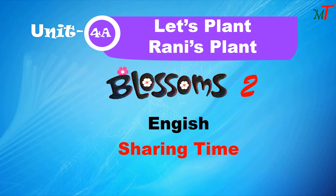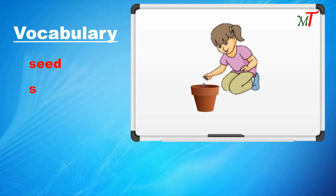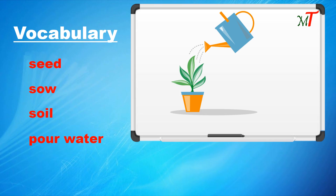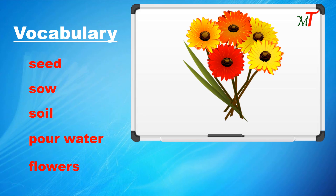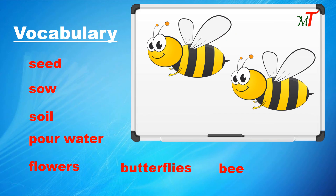Blossoms 2, Unit 4a: Let's Plant. In this unit, the sharing time topic is Rani's Plant. Vocabulary: Seed, Sow, Pour water, Flowers, Butterflies, Bees.